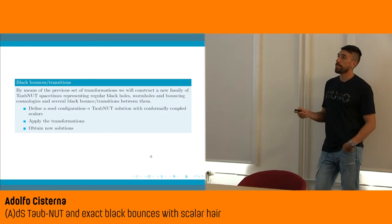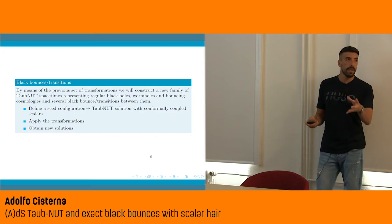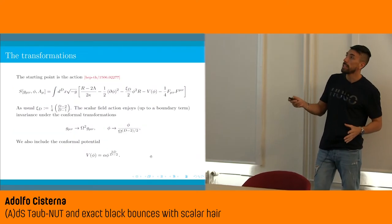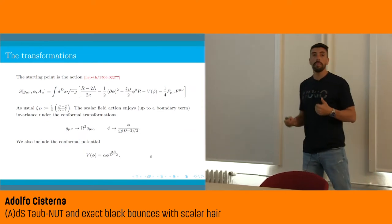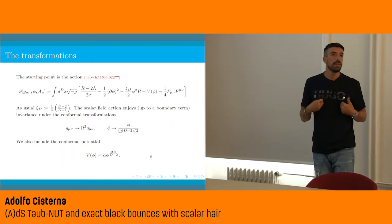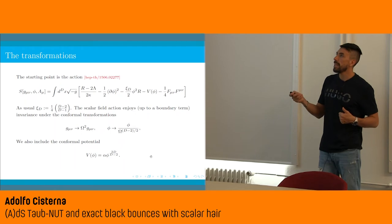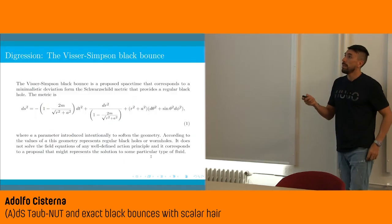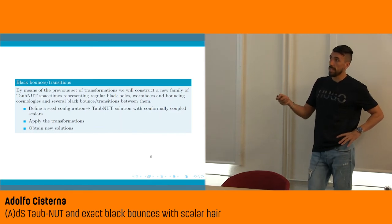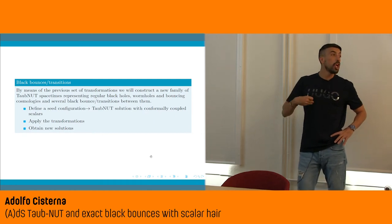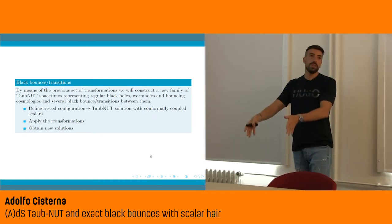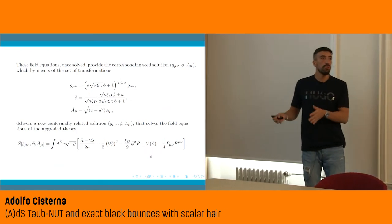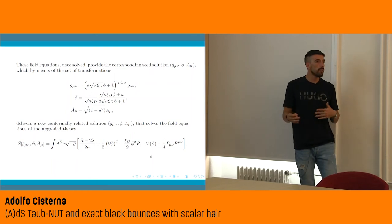The first thing we need to do is define the seed spacetime — the spacetime we are going to transform — which must be a solution of the initial theory. Because we are working in a Taub-NUT spacetime, we are looking for a black hole solution of the Taub-NUT type that solves these field equations. Once this seed for the conformally coupled theory with scalars is known, we apply the transformations, which will deliver a new solution of the slightly different theory. Then we analyze whether the resulting spacetimes represent the black bounces we are looking for.